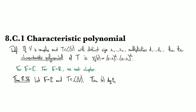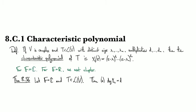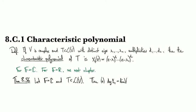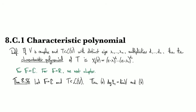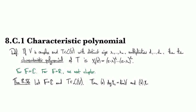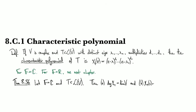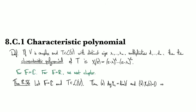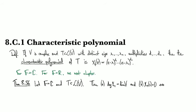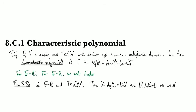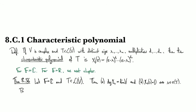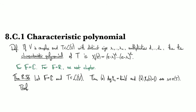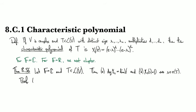The degree of the characteristic polynomial is the dimension of your vector space, and the second part is that the zeros of the characteristic polynomial are precisely the eigenvalues of T.